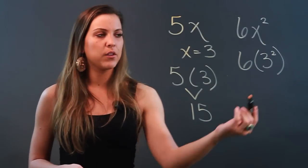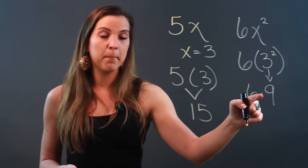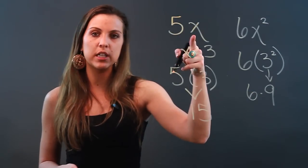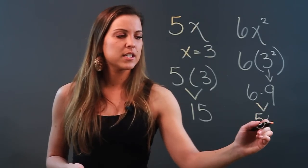And again, just work it out using my order of operations. So 3 squared is 9. I'm going to bring down my 6. I'm multiplying because I told you that a coefficient is being multiplied with the variable. And I do 6 times 9 is 54.